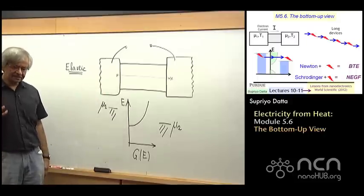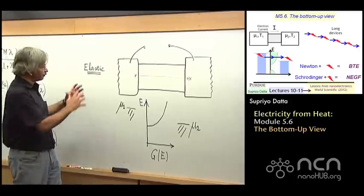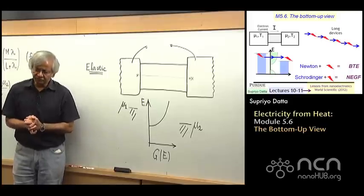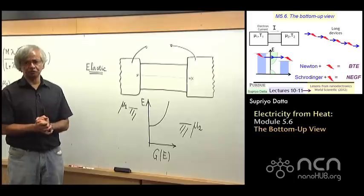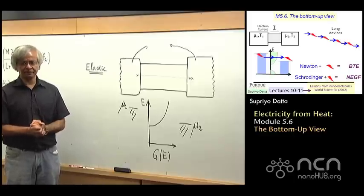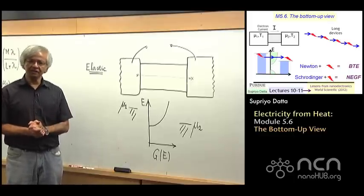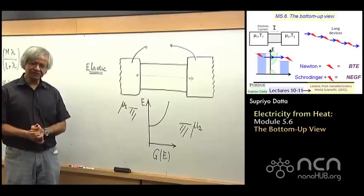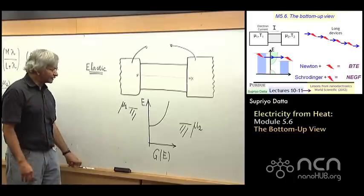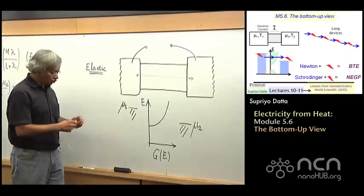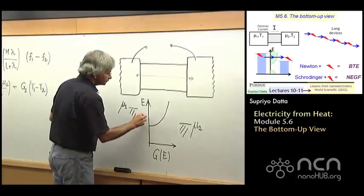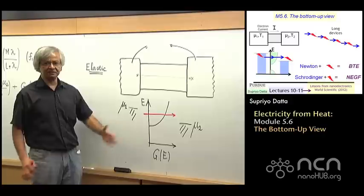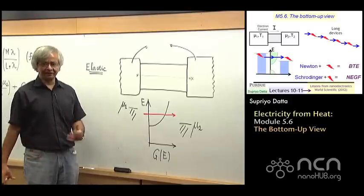The elastic resistor is really a very important, very useful conceptual tool when trying to understand transport. This is a point that I had made earlier in the very first lecture, the scientific overview, that when an electron goes through the device without exchanging energy, that's what you might call a purely mechanical process described by the laws of mechanics.